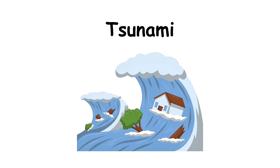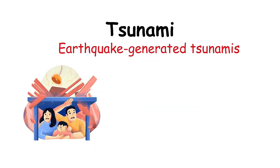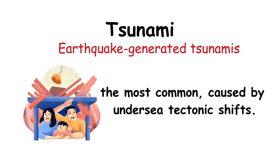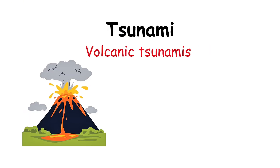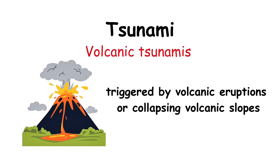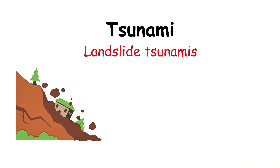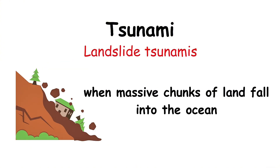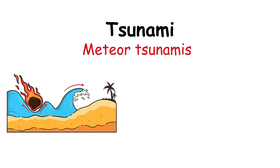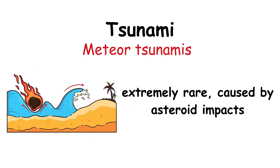Types of tsunami triggers include earthquake-generated tsunamis — the most common, caused by undersea tectonic shifts; volcanic tsunamis, triggered by volcanic eruptions or collapsing volcanic slopes; landslide tsunamis, when massive chunks of land fall into the ocean; and meteor tsunamis — extremely rare, caused by asteroid impacts.